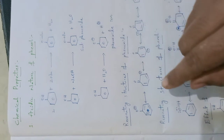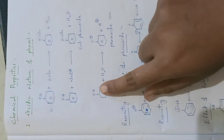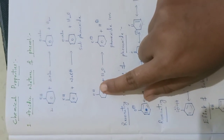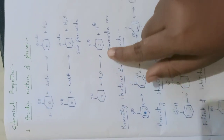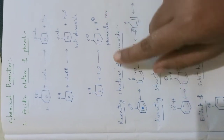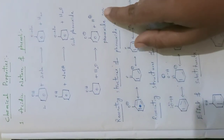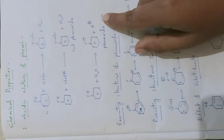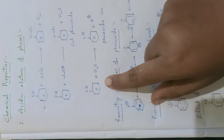Whatever hydrogen is present on this phenol, when it involves in reaction with water, it eliminates as H+. That means phenol is losing H+ ion. So we can say phenol is acidic in nature.